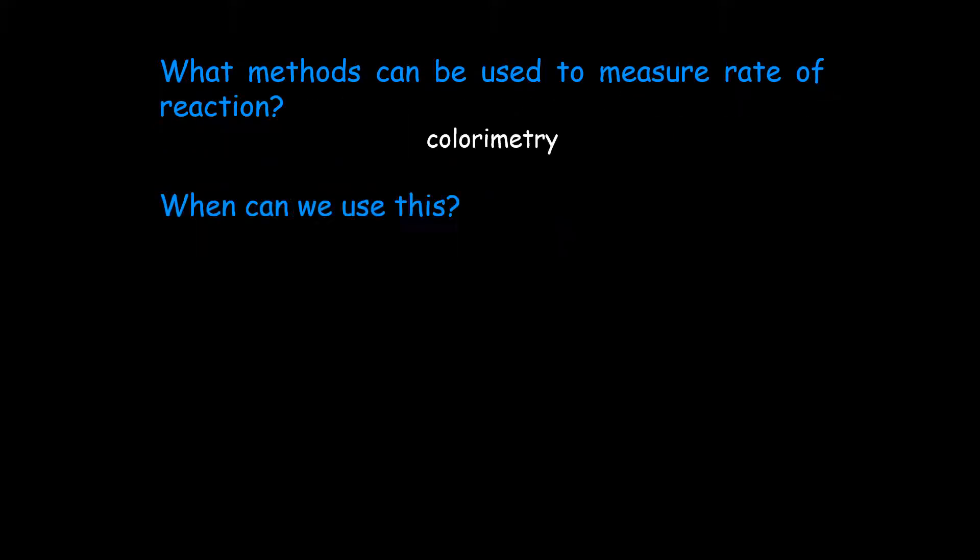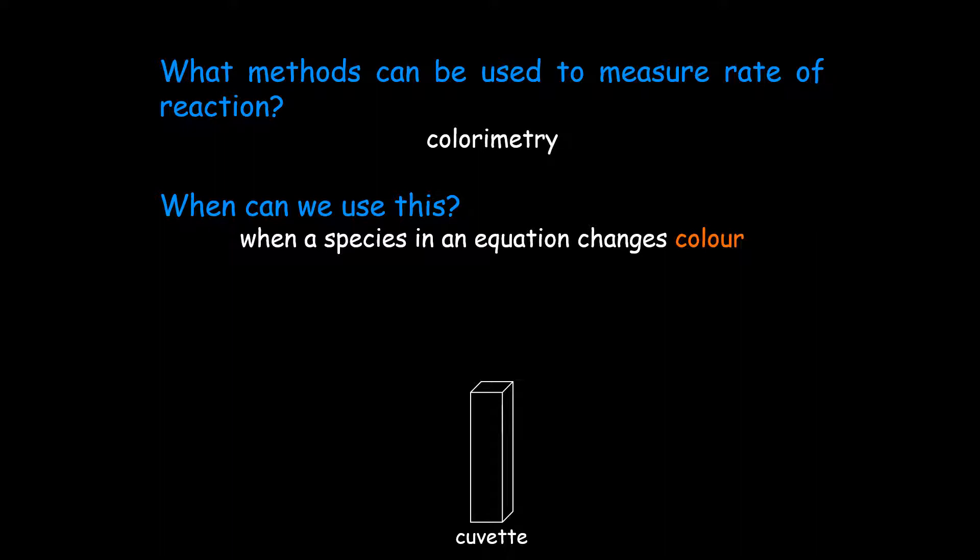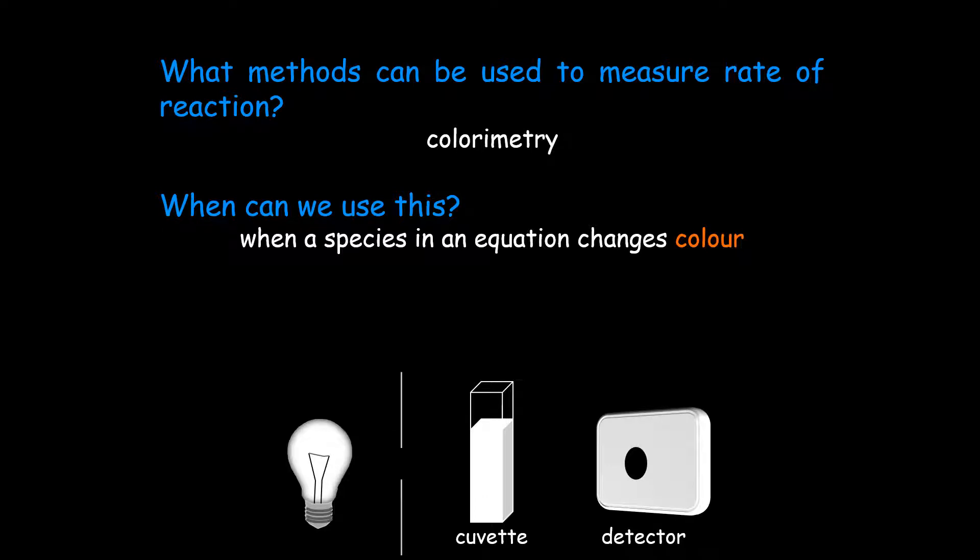We can use colorimetry when a species in an equation changes color. We have a glass cuvette which is a hollow cylinder where you can put liquids or solutions into it. Then we've got a detector and a light source that provides the correct frequency of light.